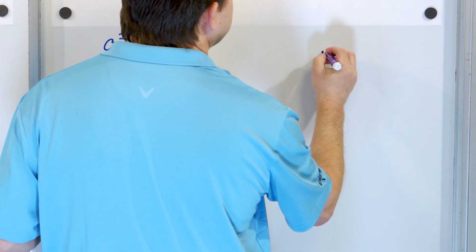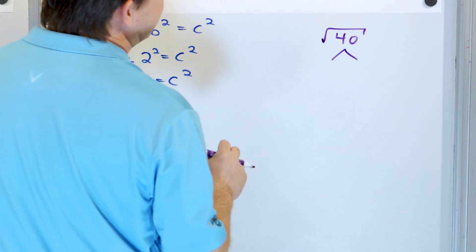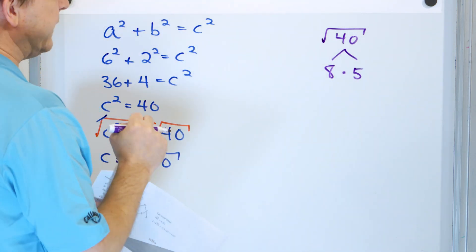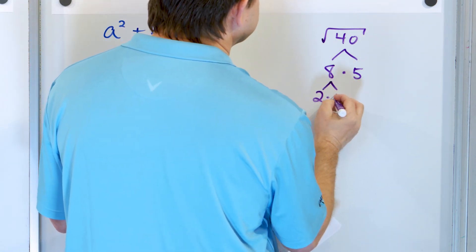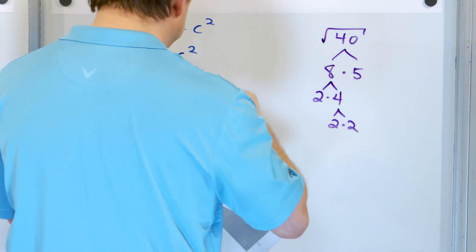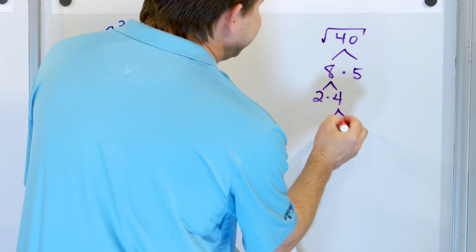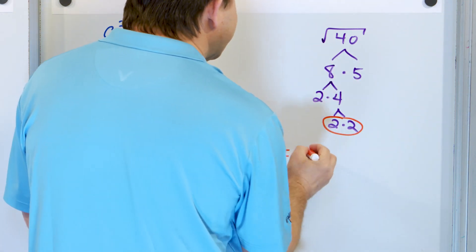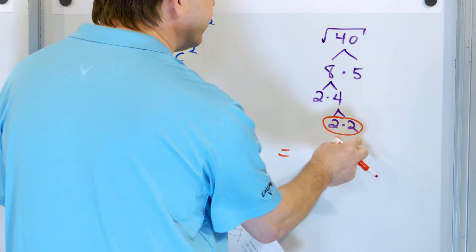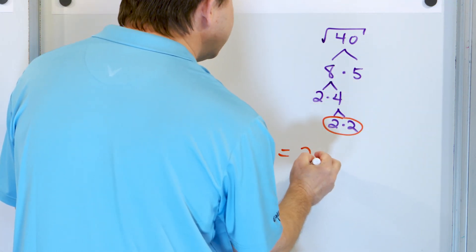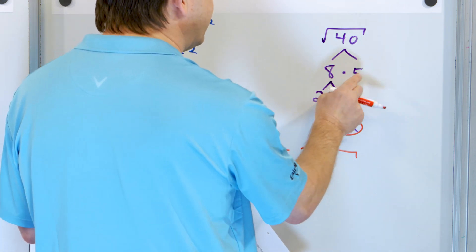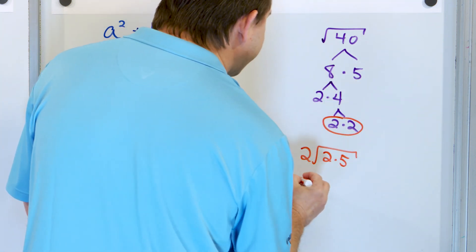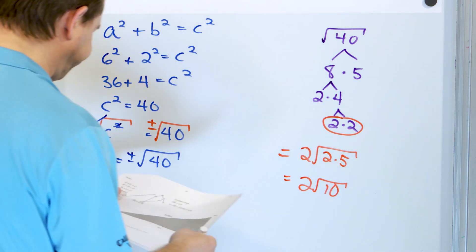Let's simplify this radical. √40 — I'll factor it as 8 × 5. The 8 is 2 × 4, and the 4 is 2 × 2. Now we're looking for pairs. I see a pair of 2s there. The remaining 2 and 5 don't have partner pairs. So the pair of 2s comes out as a single 2, and what's left underneath is 2 × 5 = 10. So √40 = 2√10.